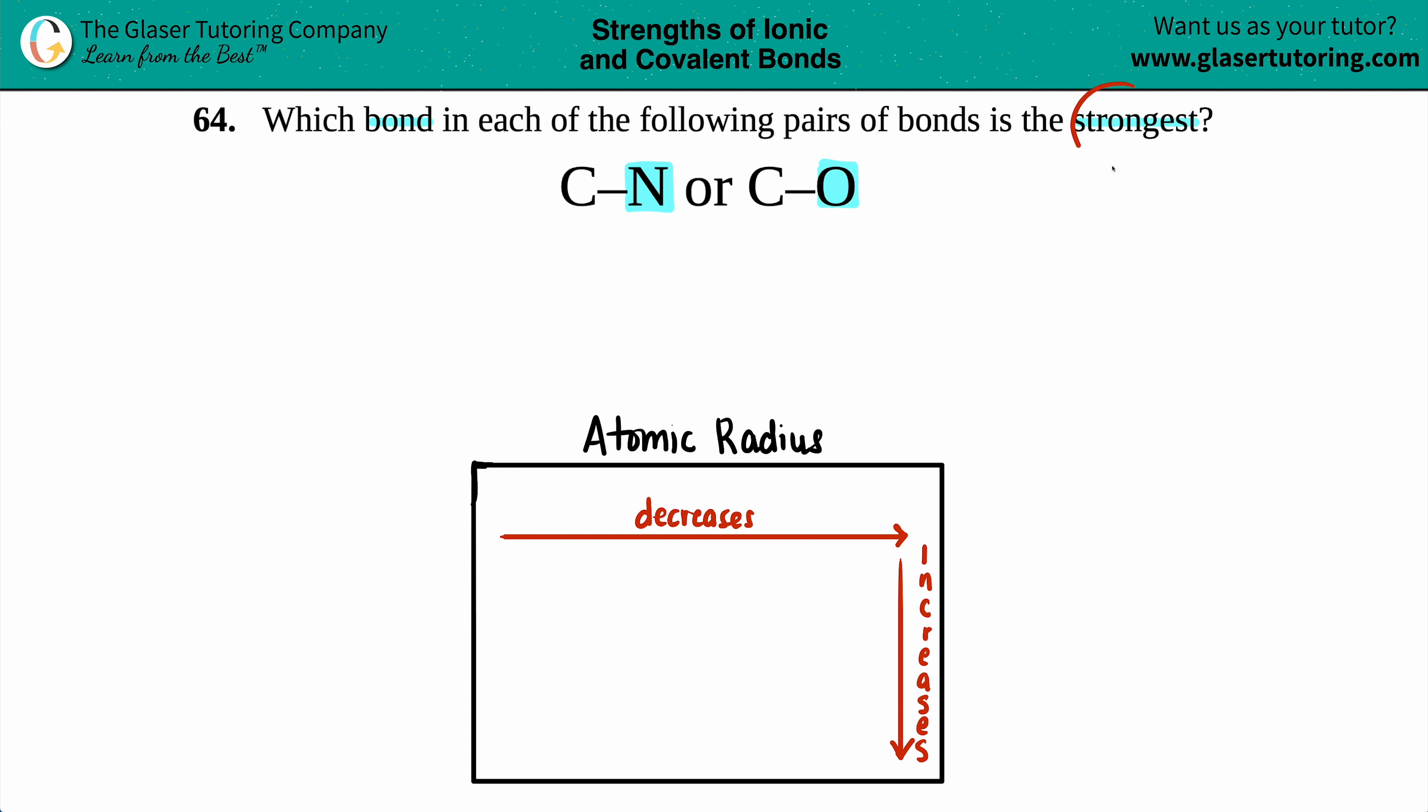That's going to make all the difference in determining which one is the strongest one. Well, if you're debating between two different atoms, the idea here is that strongest bond always goes with the shortest bond.